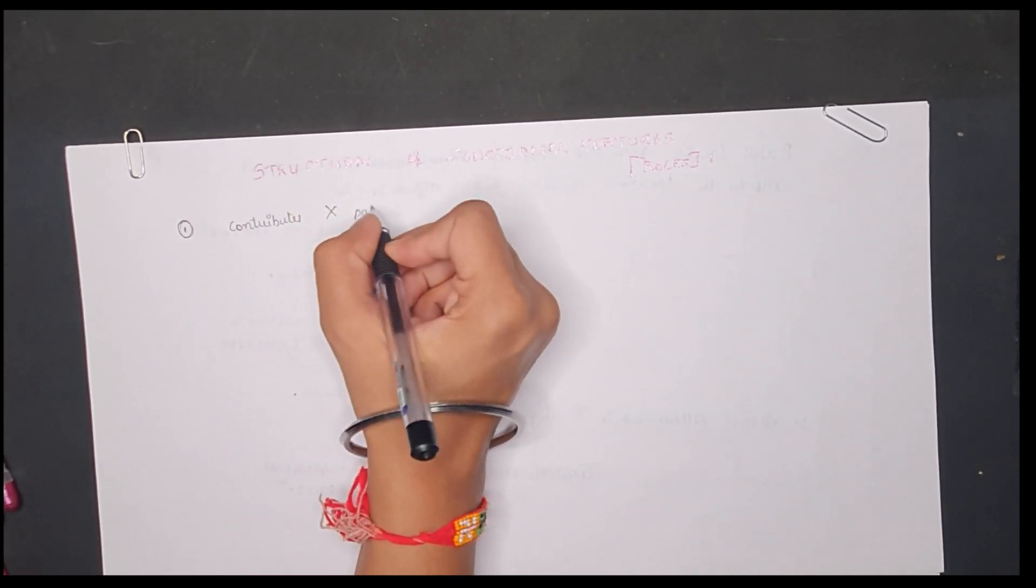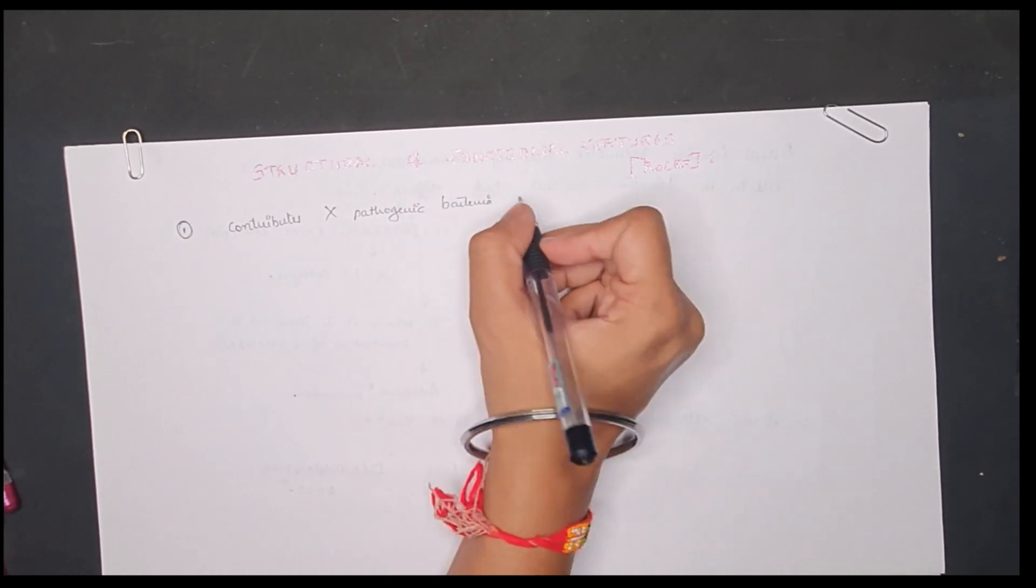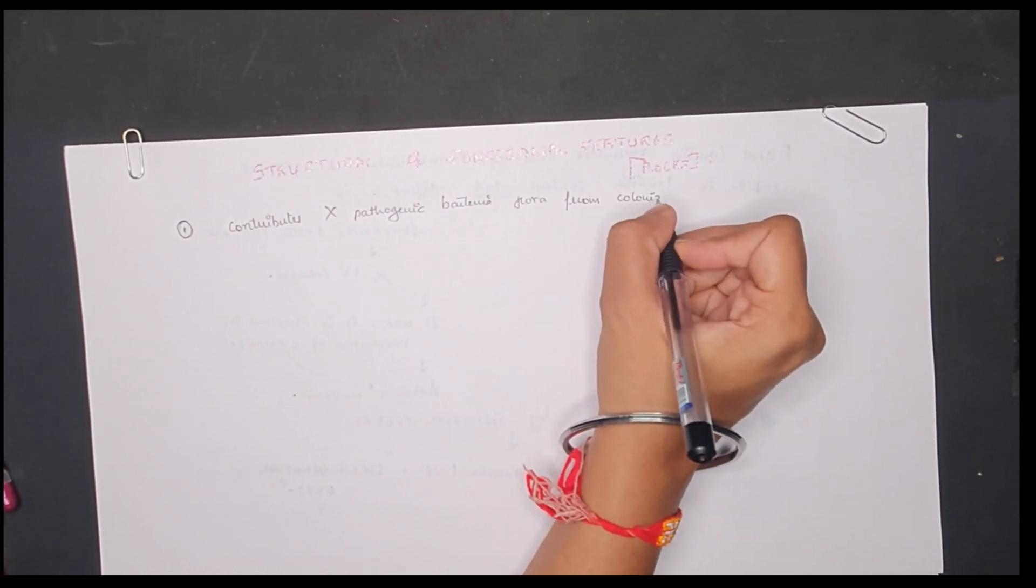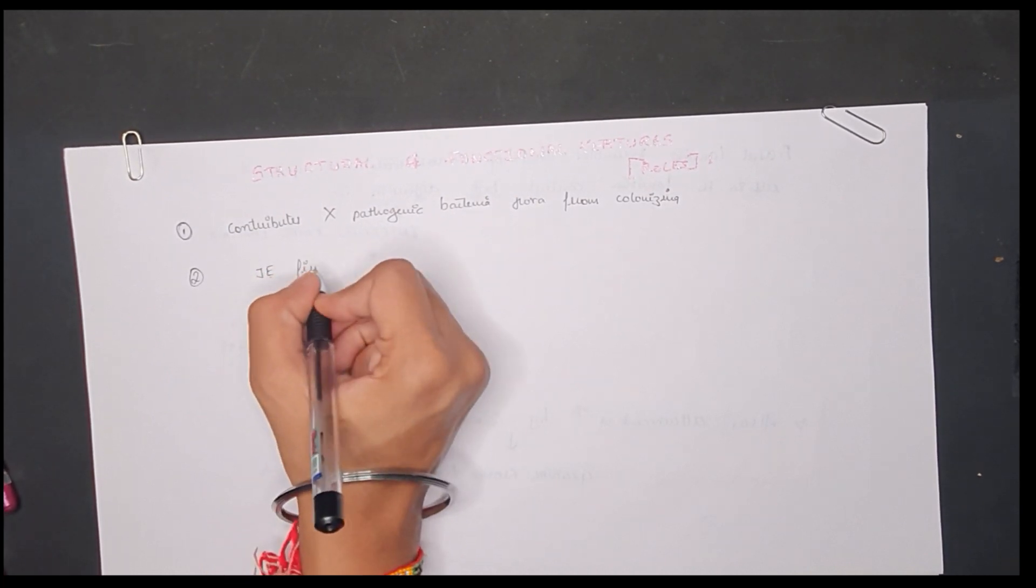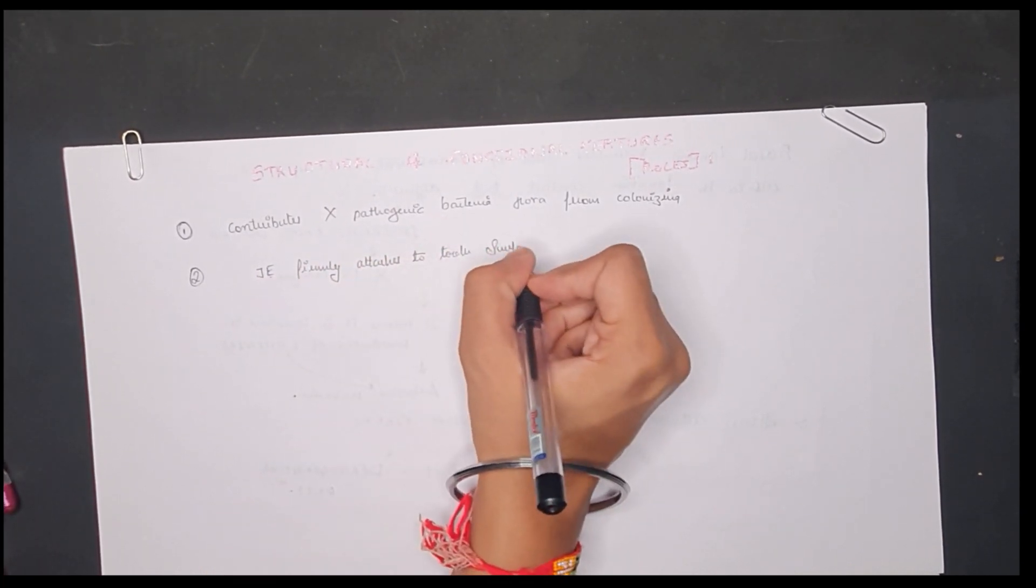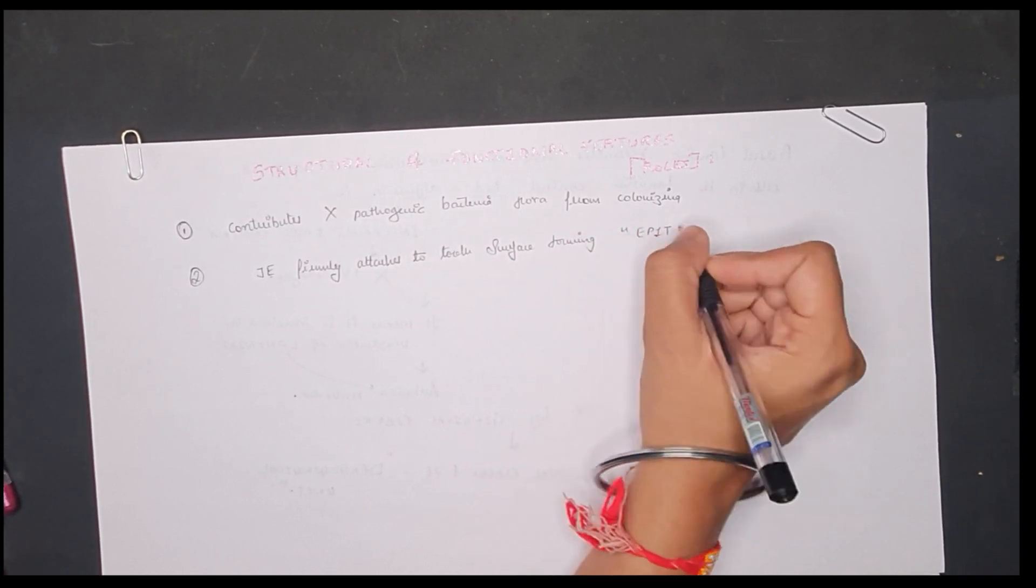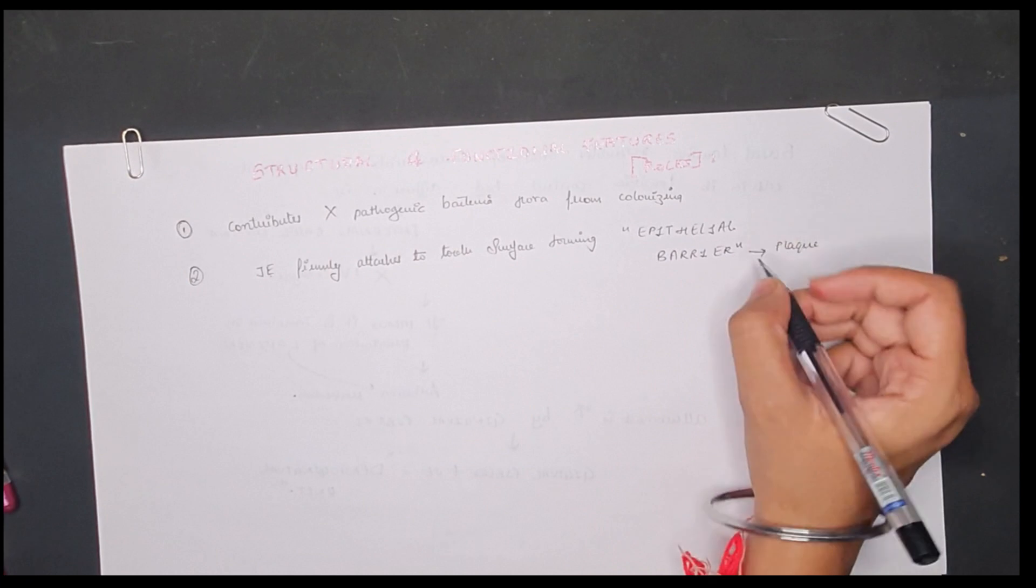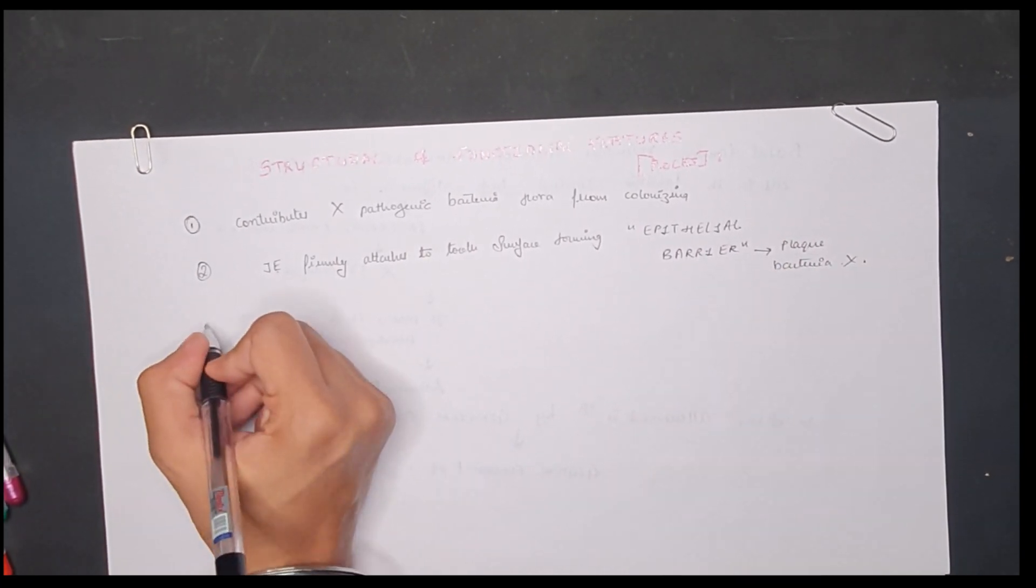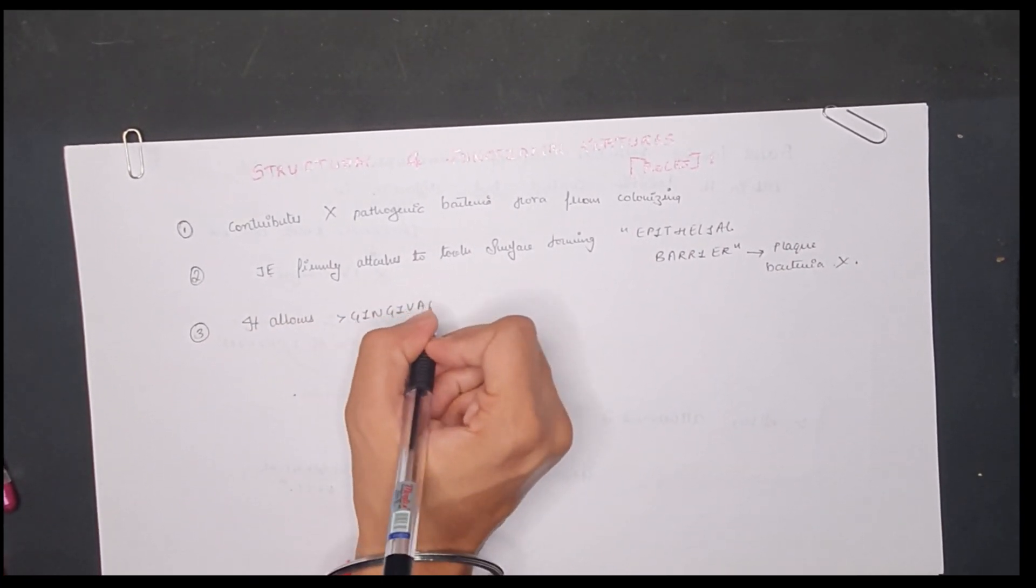First, it contributes to preventing pathogenic bacterial flora from colonizing the subgingival tooth surface. Junctional epithelium firmly attaches to the tooth surface, forming an epithelial barrier against plaque bacteria, not allowing the plaque bacteria to come inside or cause any harm. It also allows access to gingival fluid, inflammatory cells, and components of immunological host defense to the gingival margin.